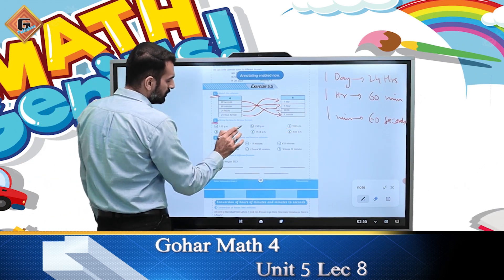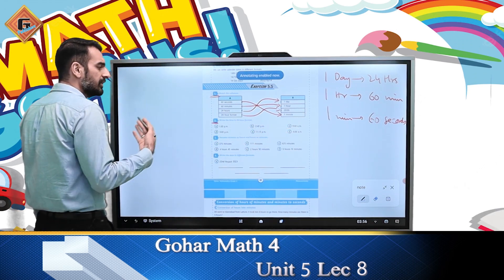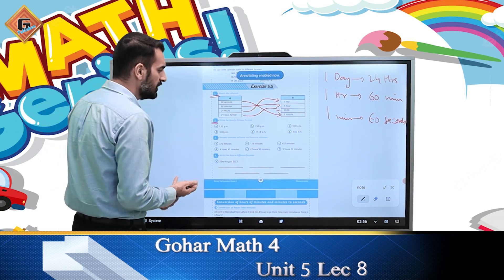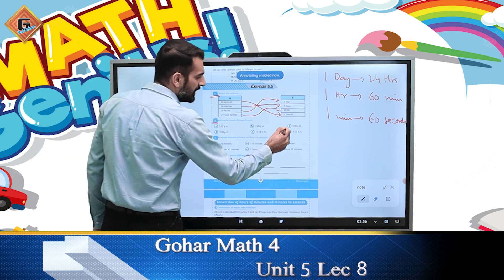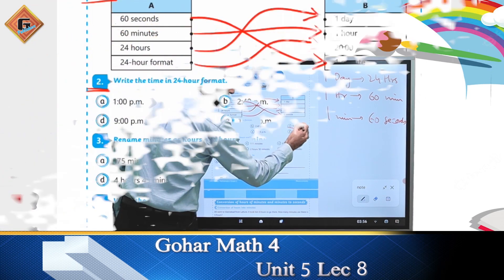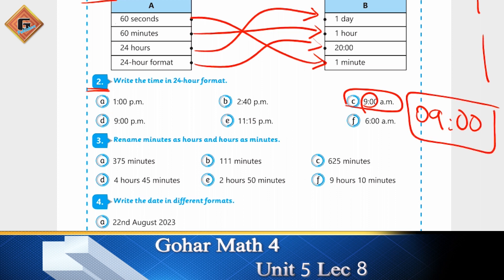और एक time in 24-hour format — यह आपको 12-hour format में दिया है, जिसमें a.m. और p.m. आपको नज़र आ रहे हैं। इसको आपने 24 hours में लिखना है। तो 9 a.m. — जब a.m. आता है तो time as it is रह जाता है, तो यह 0900 show होगा।